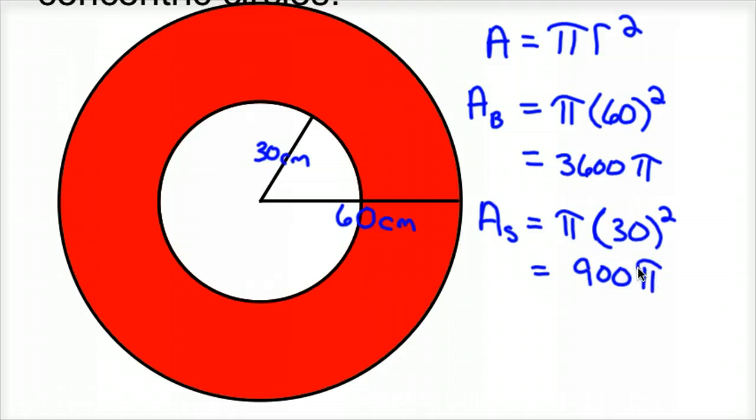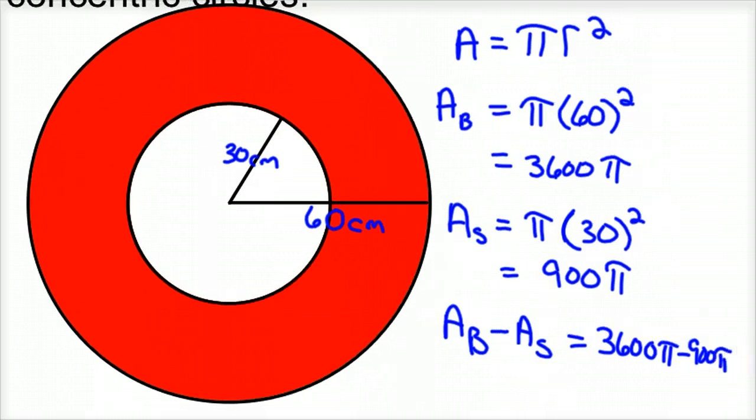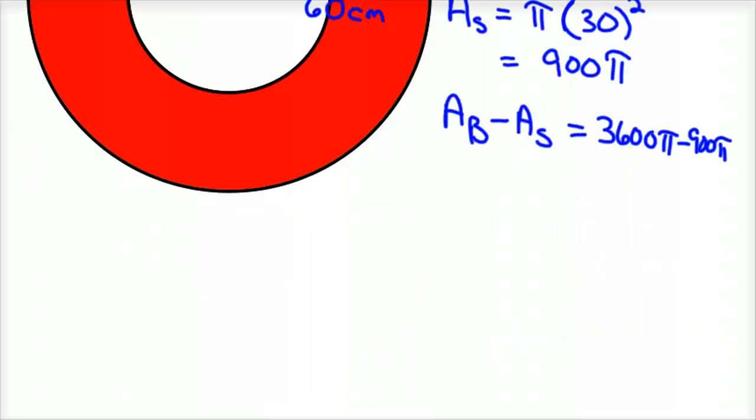So to find the area of the shaded region between those, you just have to subtract them. So in our case, it would be the area of the big circle minus the area of the small circle. And so we'd have 3600π minus 900π. That kind of ran off the screen a little bit. There we go. And then just go ahead and simplify that out. So 3600 minus 900 would be 2700π, because you treat π like a variable.